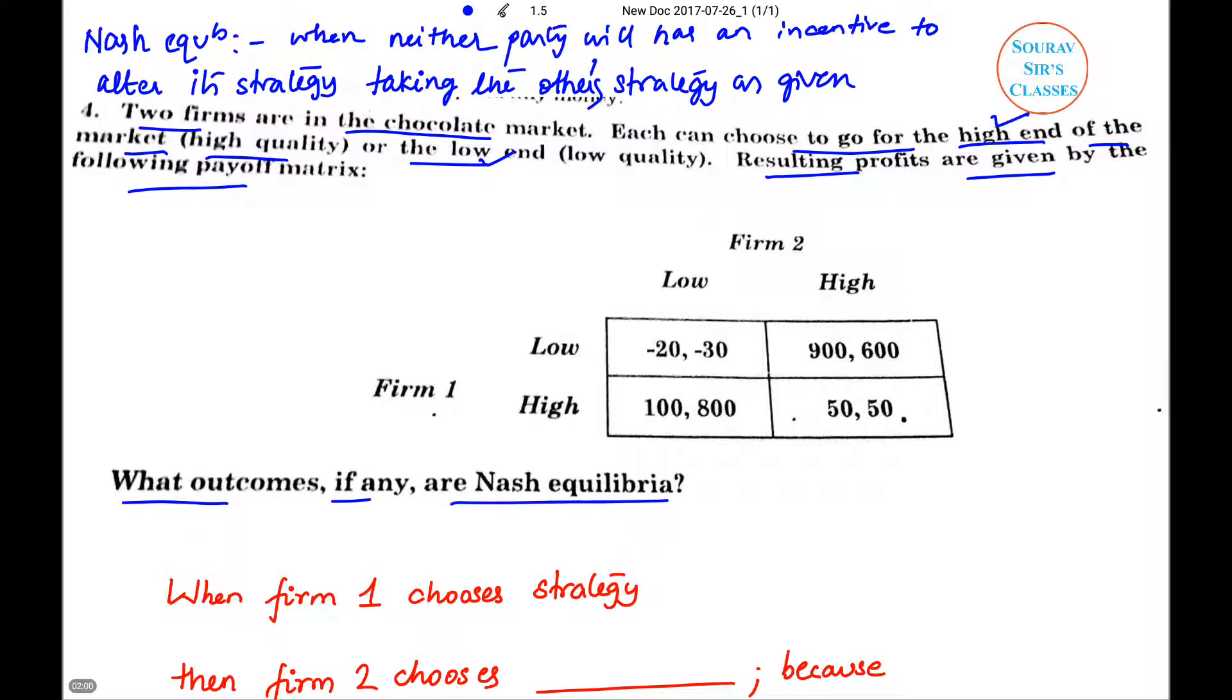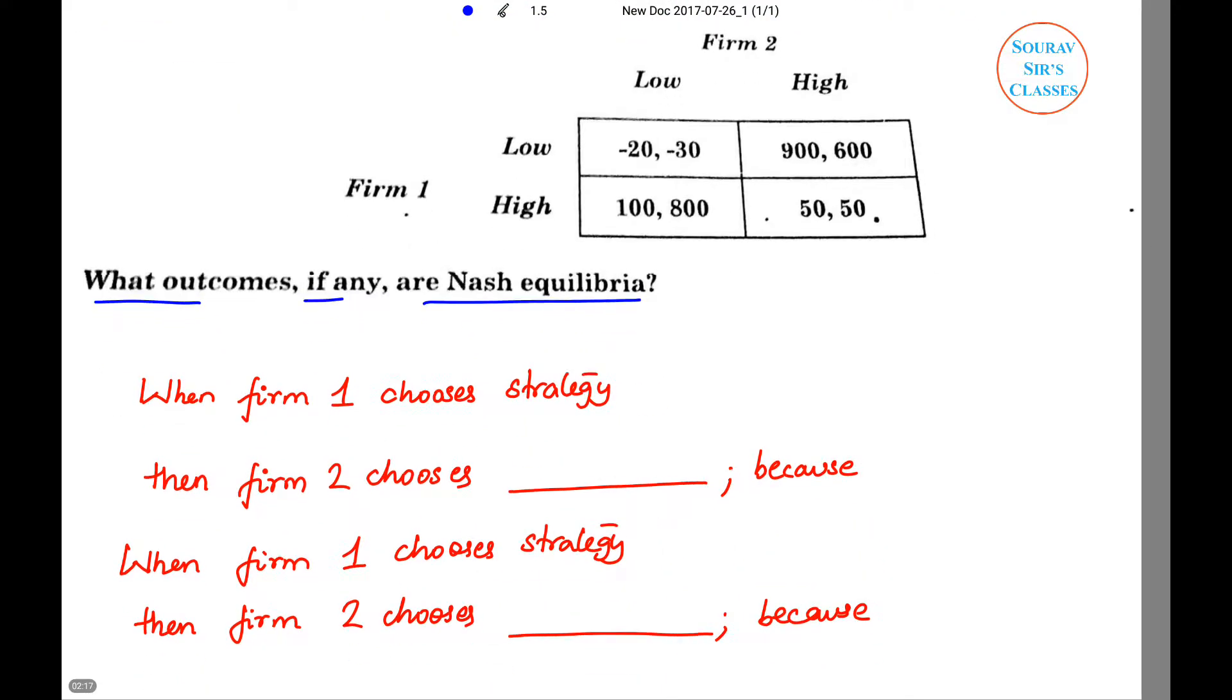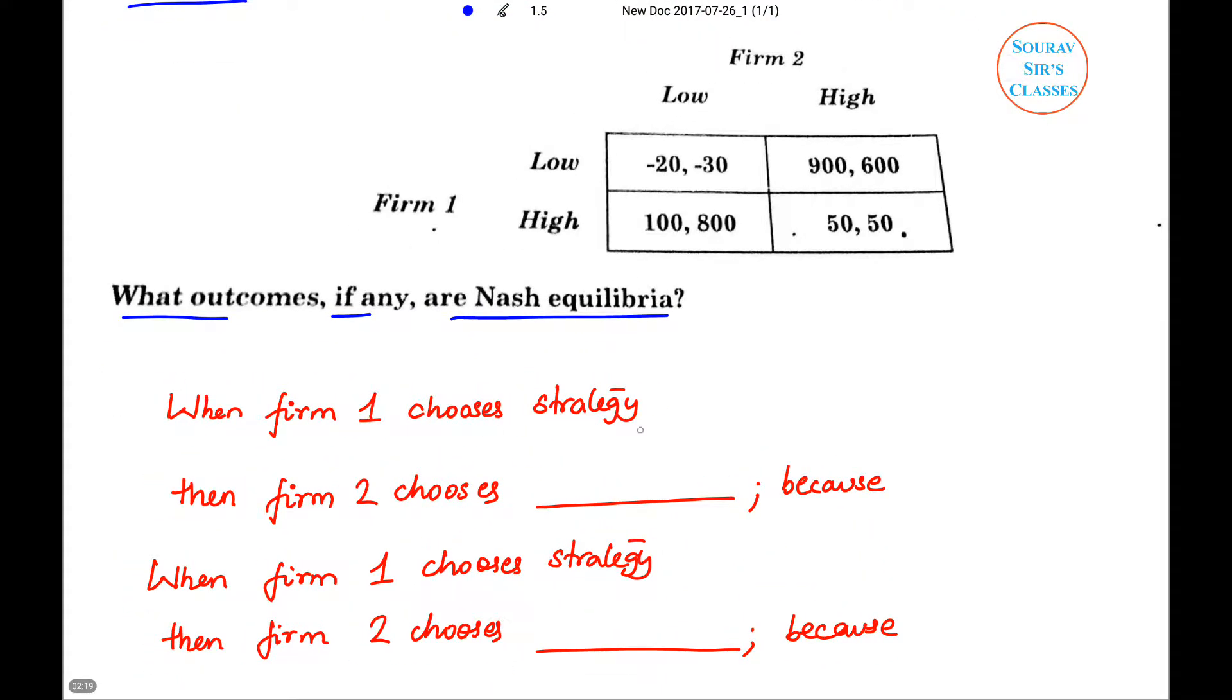And this last line of the definition is the one which draws a line between Nash equilibrium and dominant strategy. Now if there are more than one Nash equilibrium, we will call it Nash equilibrium.